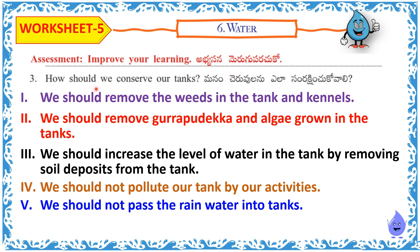How should we conserve our tanks? We should remove the weeds in the tank and canals. We should remove weeds and algae grown in the tanks. We should increase the water level in the tank by removing soil deposits. We should not pollute our tank by our activities. We should not divert rain water away from tanks.